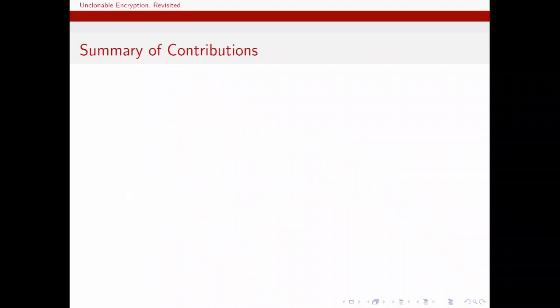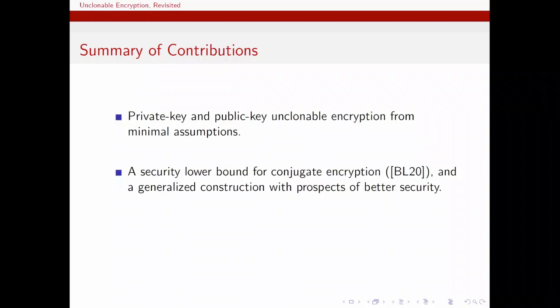To summarize, our contributions can be presented as private key and public key unclonable encryption, which satisfy semantic security. And we analyze the unclonable security of conjugate encryption and provide a lower bound using a simple cloning attack. And in terms of upper bound, we don't have a concrete value, yet we open a new avenue for using monogamy of entanglement to achieve that. And finally, we show that the stronger primitive unclonable indistinguishability implies copy protection for point functions.